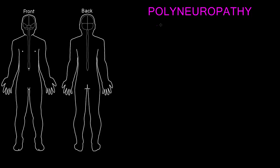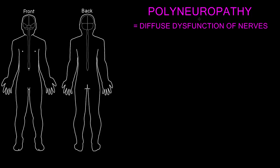In this video, I want to talk a little bit more about the syndrome we call polyneuropathy, which means diffuse dysfunction of peripheral nerves. Polyneuropathy means diffuse dysfunction of nerves — this is a peripheral neurological syndrome where the nerves are abnormal diffusely in many areas of the body on both sides.